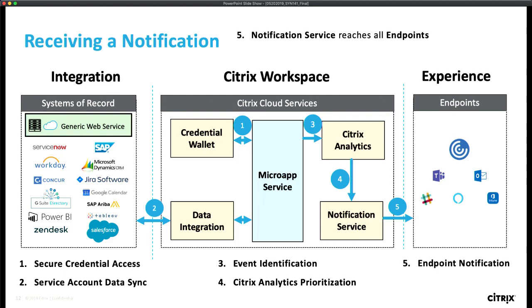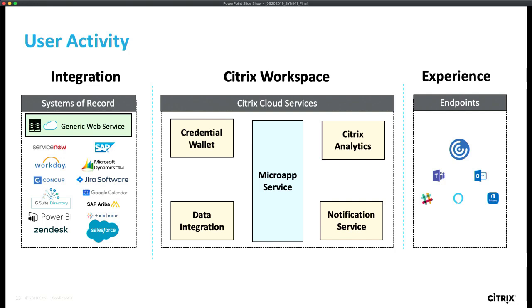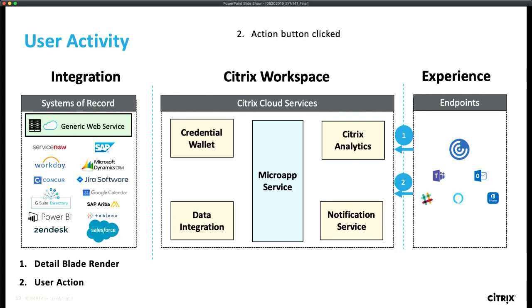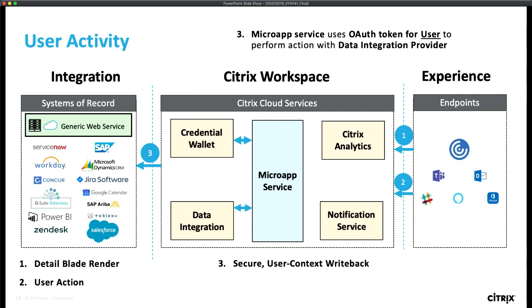As a user, once I receive a notification, what actually happens? First, if I open the detail blade, we go fetch more data from the microapp cache to give me the information I need to take a deeper action — like when Pepper opened that Salesforce contract to see those line items. This is important: when we send a notification out of band — say, into Slack — we lose control over it, and you may not want to put sensitive information in that notification. We give you flexibility to put whatever information you want in that notification, then force users to authenticate and pull the rest of the data for the detail blade. When Pepper hits the Approve button, we use Pepper's own credentials — not the service account — so the system of record has an audit log reflecting that it was Pepper Potts who took the action, not some generic API.